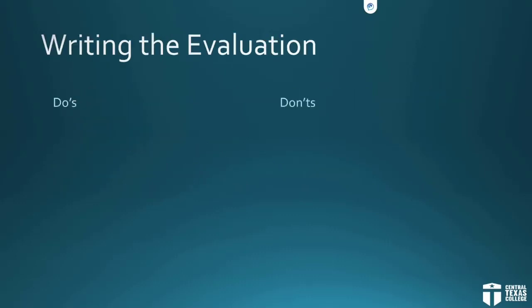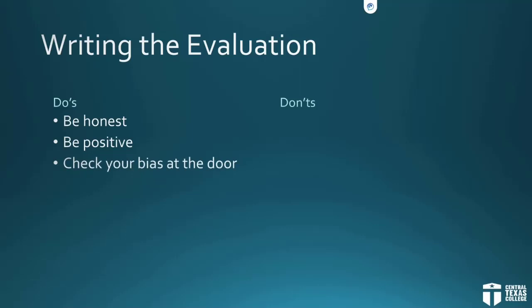A few dos and don'ts when it comes to performance evaluations: be honest — there's no need to lie or make stuff up. Be positive and don't go into evaluation briefings with a negative attitude. Check your bias at the door — even if you personally don't like the employee, don't let that show during the review. Explain everything — make sure they understand why they got a 'needs improvement' or a 'meets' on each item. Don't just say 'you got a meets on all of them, see you later' — that's not an effective evaluation review. Go through each section individually and let them know how they did and why.